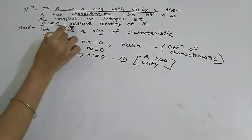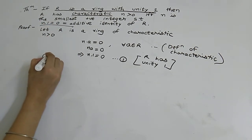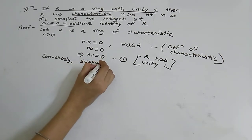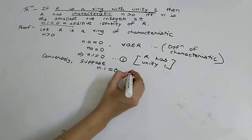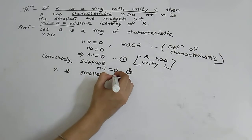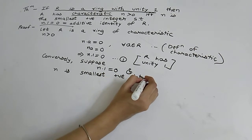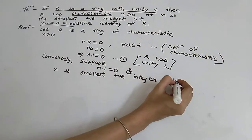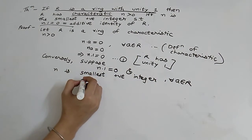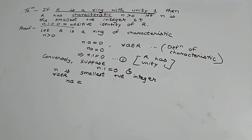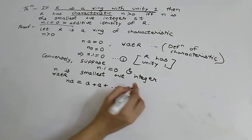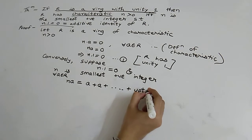Now we have to prove the converse. Conversely, suppose that n into 1 is equal to 0 and n is the smallest positive integer. For all a belonging to R, we need to show n·a equals 0. Now n·a can be written as a plus a, n times, up to n terms.